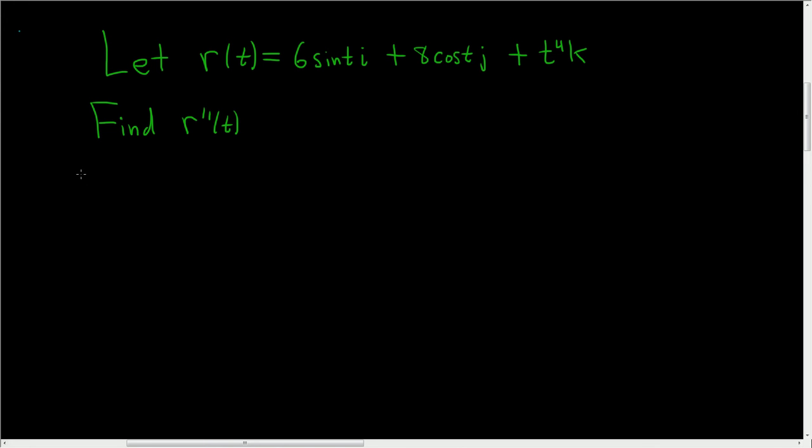We're given a vector-valued function, and we're asked to find the second derivative. So all we have to do is take the derivative twice.